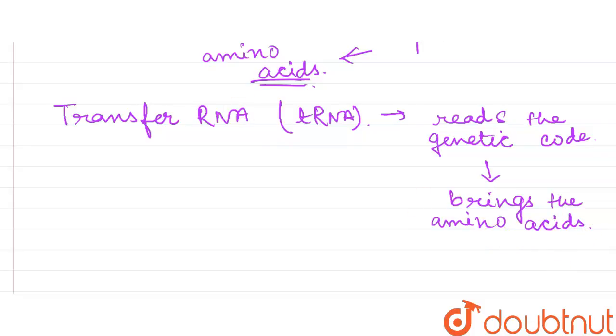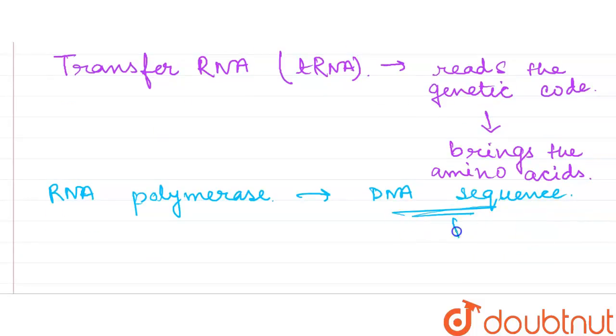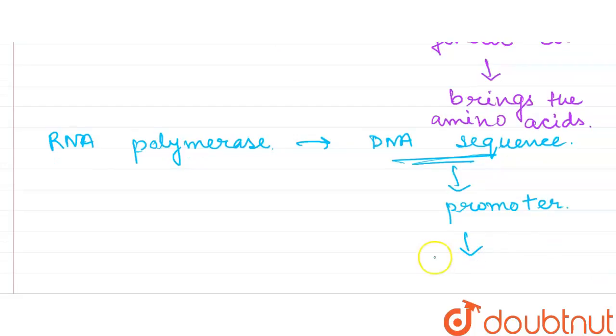Then RNA polymerase, this enzyme RNA polymerase, this enzyme binds to the DNA sequence and this sequence is called as promoter. And after binding it initiates the transcription process, initiates transcription.